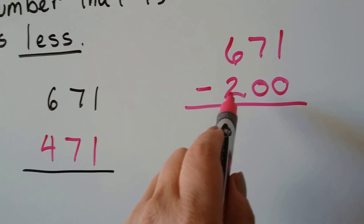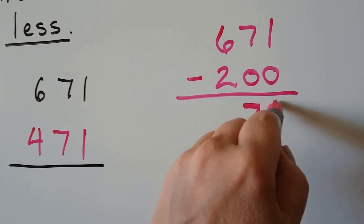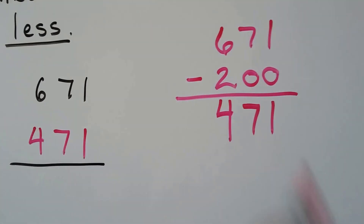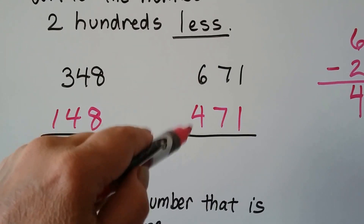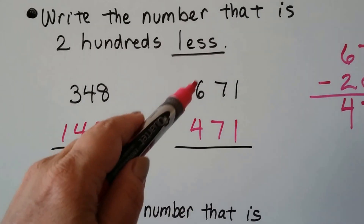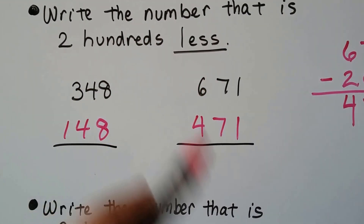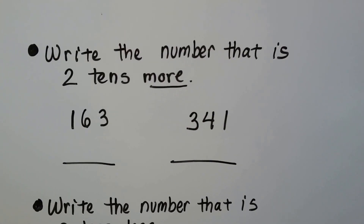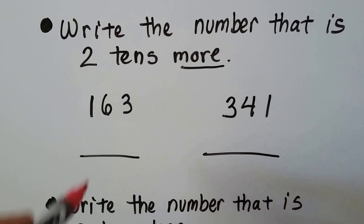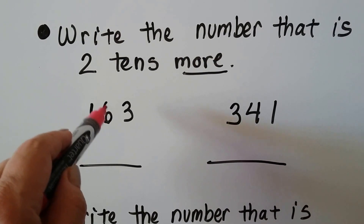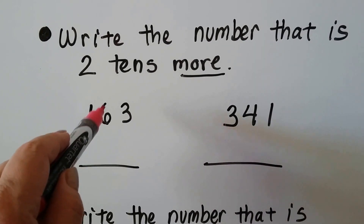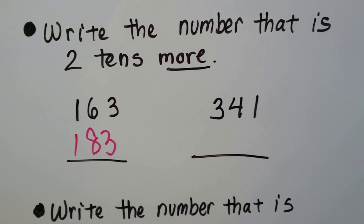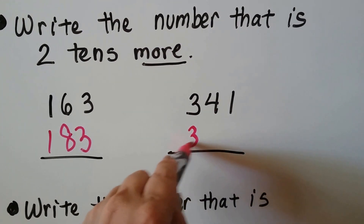In our head: we have 671 and we're taking away 200. Since 200 has a zero in the tens place and ones place, the tens and ones stay the same — we're just changing the hundreds place by taking away two. If you had six dollars and 71 cents and spent two dollars, you'd have four dollars and 71 cents. Now for two tens more: adding two tens to 163 — six, seven, eight — gives us 183. Two tens more than 341 means two more than four in the tens place is six, giving us 361.